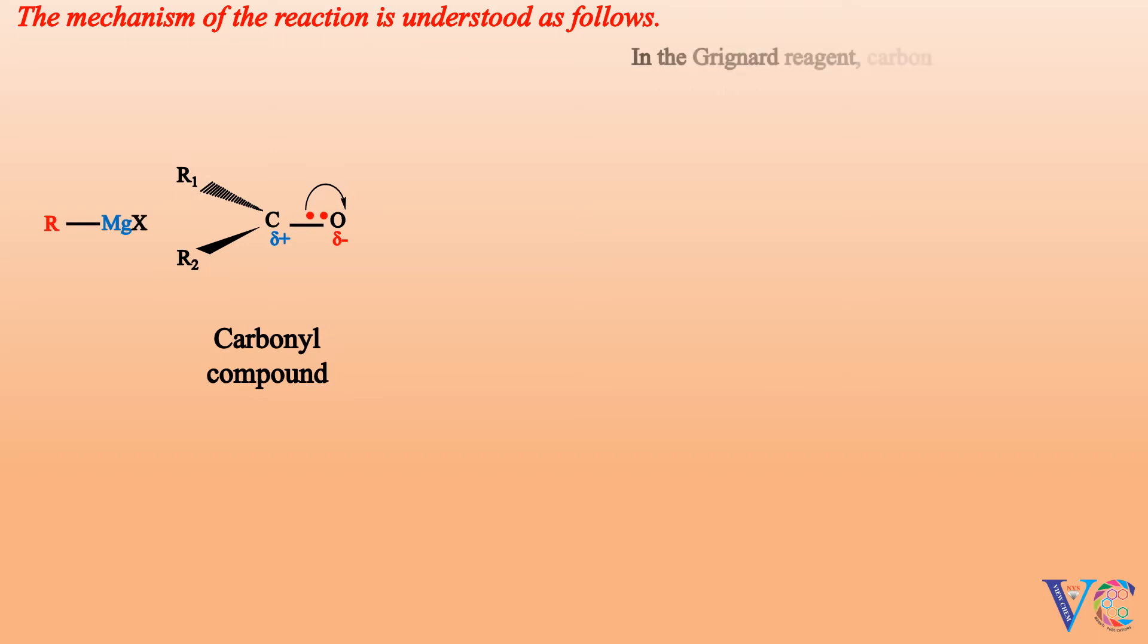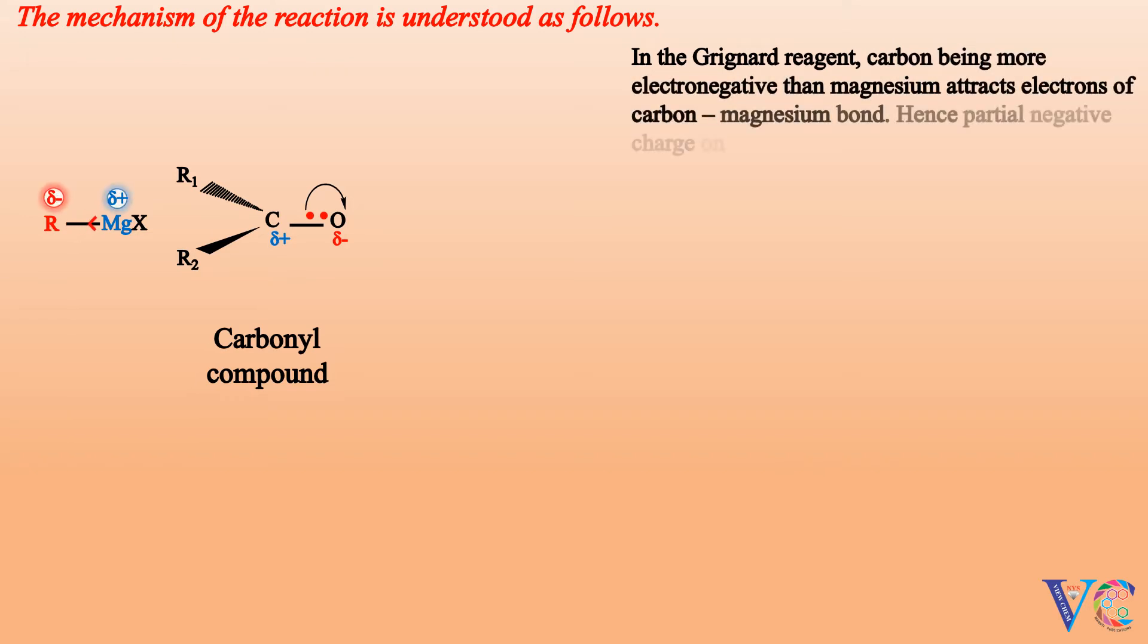The mechanism of the reaction is understood as follows. In the Grignard Reagent, carbon being more electronegative than magnesium attracts electrons of carbon-magnesium bond. Hence, partial negative charge on carbon and equivalent magnitude of partial positive charge on magnesium will be developed.